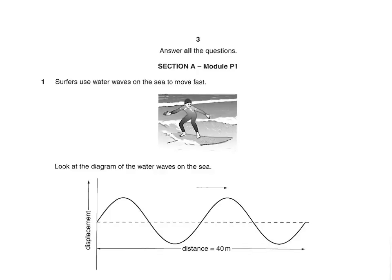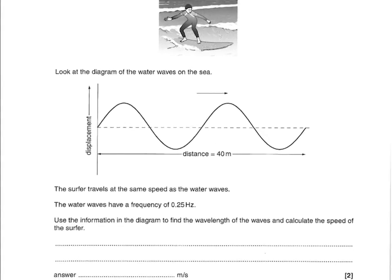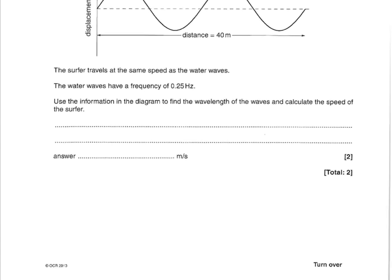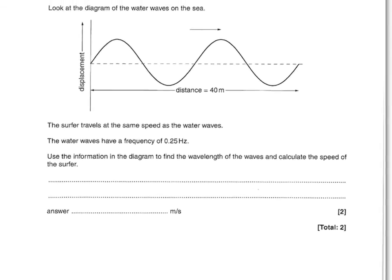Last section is the physics section. Surfers use water waves on the sea to move fast. The surfer travels at the same speed as the water waves. The water waves have a frequency of 0.25 hertz. Use information from the diagram to work out the wavelength of the waves and calculate the speed of the surfer. Look back at your equations: wave speed equals wavelength times frequency. The wavelength of two waves is 40, therefore the wavelength of one is 20. So it's 20 times 0.25, which gives you 5 metres per second. That gives you two marks.